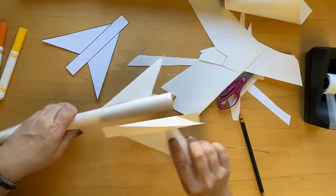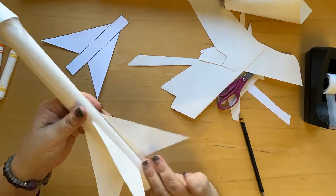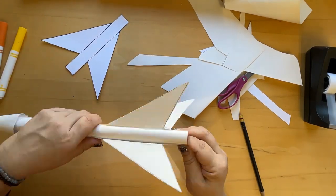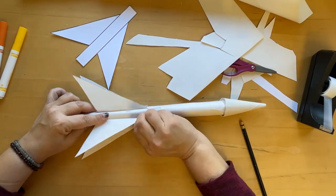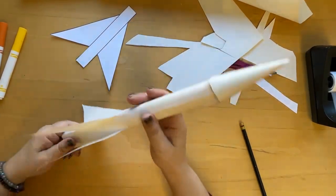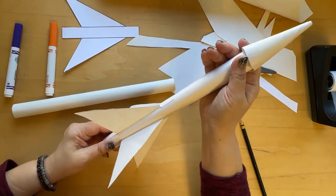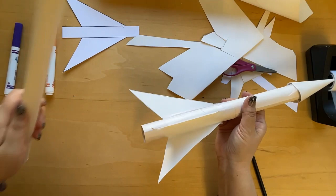And the next one, you're going to put across from that one, so on the other side of the rocket. And now if you'd like to decorate your rocket, you can go ahead and do that. You can color it in, you can decorate the launcher.